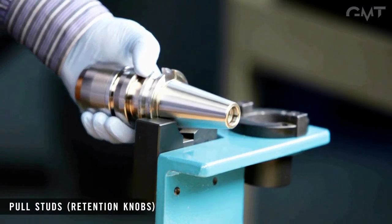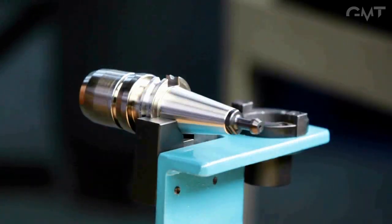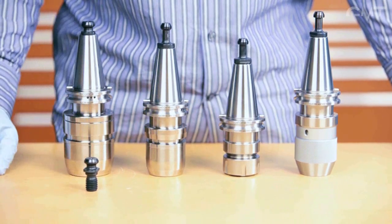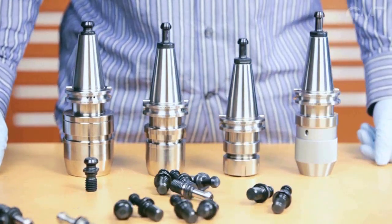Pull studs are threaded onto the backs of tool holders designed for CNC machines. Several different types are available.